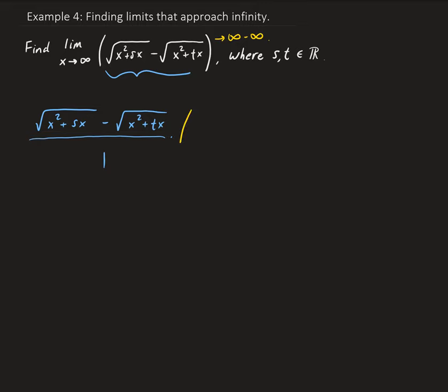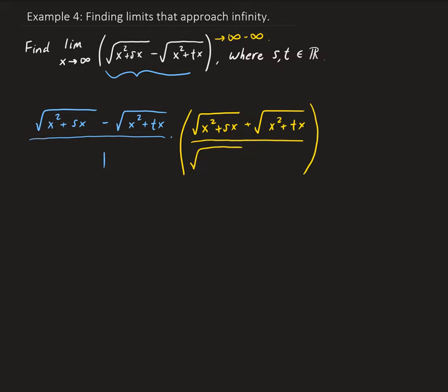We're going to multiply the numerator by the conjugate of this expression. So this is going to get multiplied by the square root of x squared plus sx plus the square root of x squared plus tx. We need to multiply the denominator by the same expression.